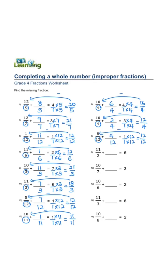6 over 1, denominator is 2. 6 times 2, 1 times 2 equals 12 over 2. 12 minus 11 is 1 over 2. 3 over 1,